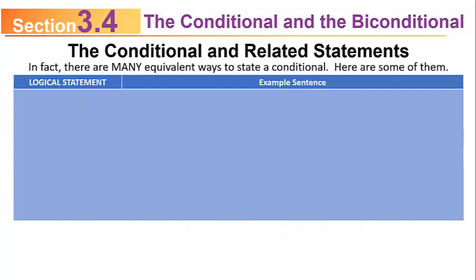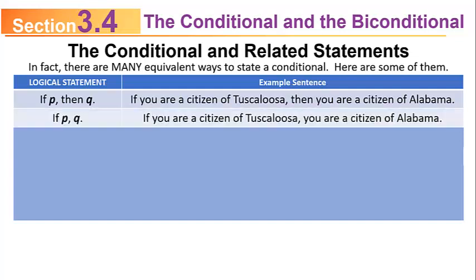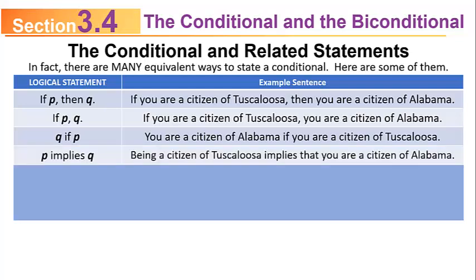I want to list several logical equivalents and give you an example of each. We start off with if P then Q. My example sentence is: if you are a citizen of Tuscaloosa, then you are a citizen of Alabama. If P, Q — that leaves out the word then, which is very common in English: if you are a citizen of Tuscaloosa, you are a citizen of Alabama. Q if P: you are a citizen of Alabama if you are a citizen of Tuscaloosa. P implies Q: being a citizen of Tuscaloosa implies that you are a citizen of Alabama.